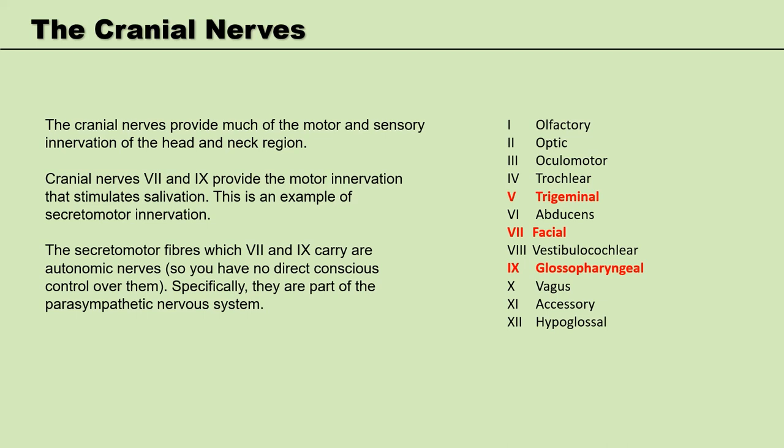Today we are looking at nerves that cause the major salivary glands to secrete. The nerve fibres stimulating secretion are called secretomotor fibres. These run in nerve 7, the facial nerve, and in nerve 9, the glossopharyngeal nerve. The nerve fibres that cause the salivary glands to secrete are all part of the parasympathetic nervous system, which itself is part of the autonomic nervous system — the part controlling functions we don't have voluntary control over.